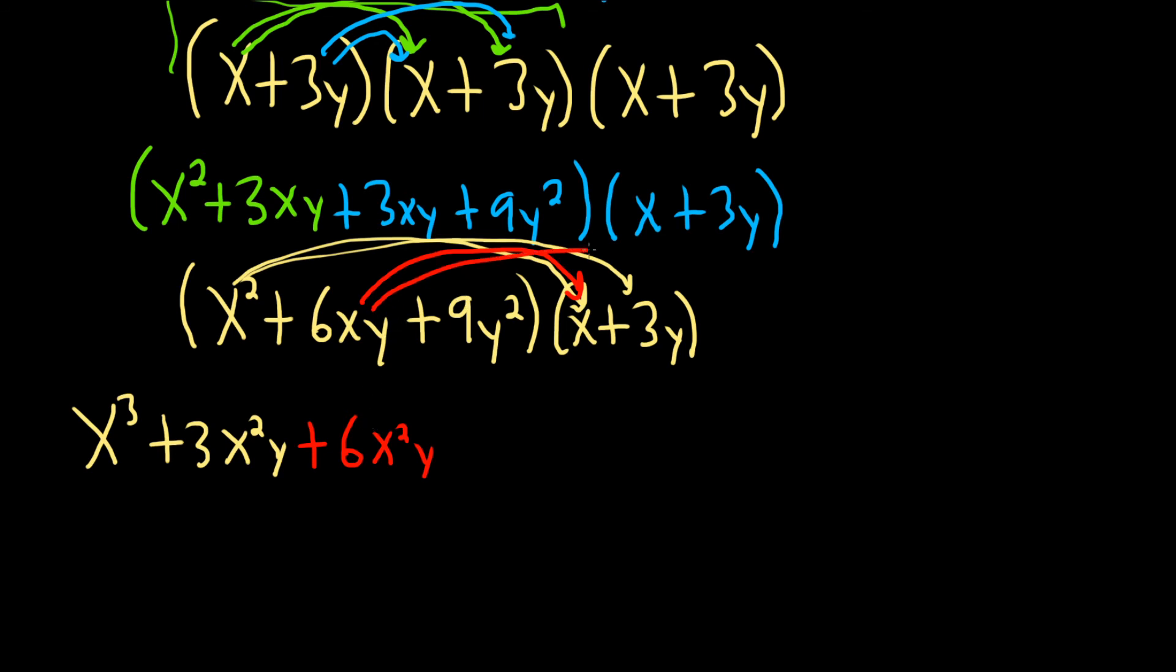And then 6xy times 3y will give us 18xy squared. Finally, we're at the last one. So 9y squared times x is plus 9xy squared. I wanted to put the x first. And then 9y squared times 3y, well, 9 times 3 is 27. And y squared times y is y cubed.